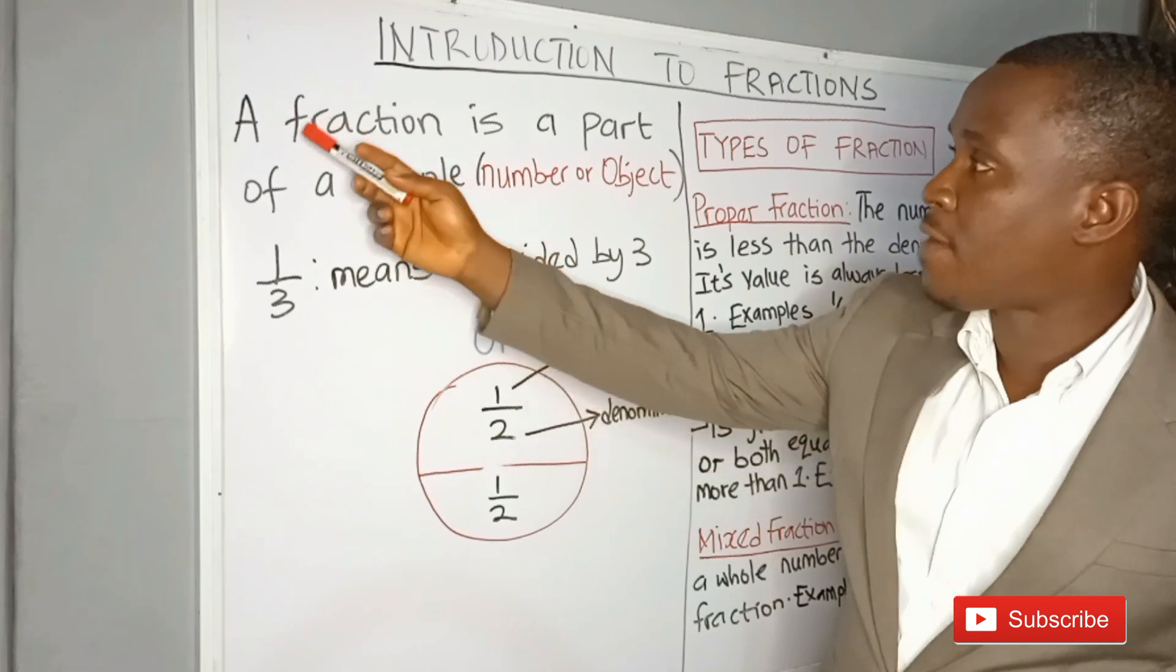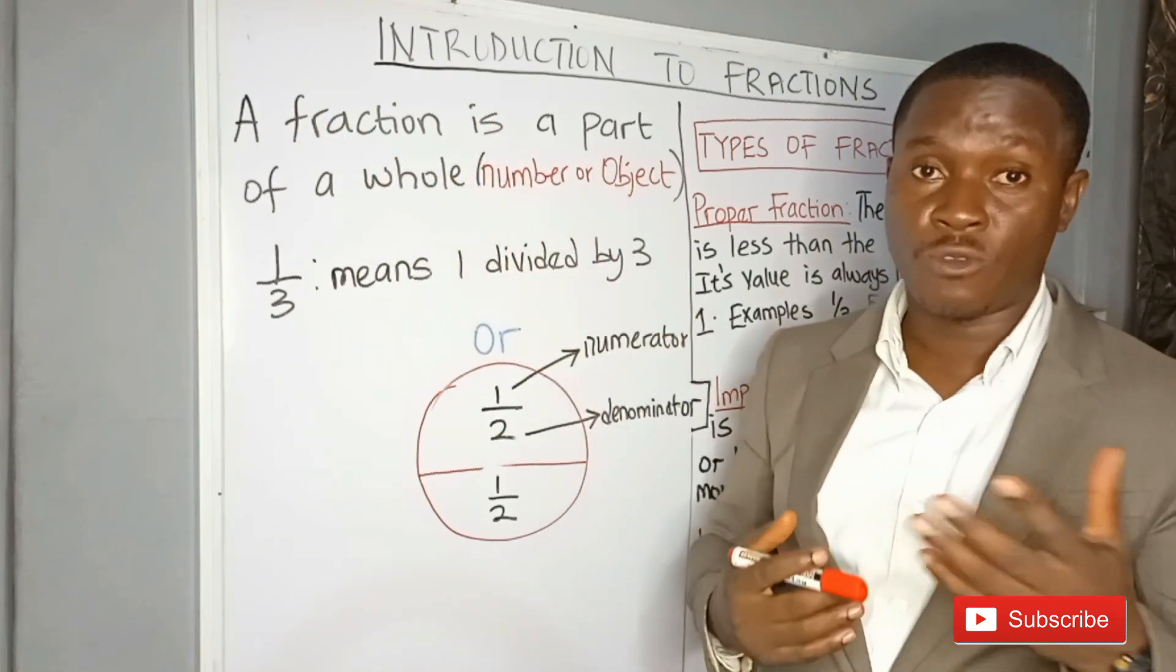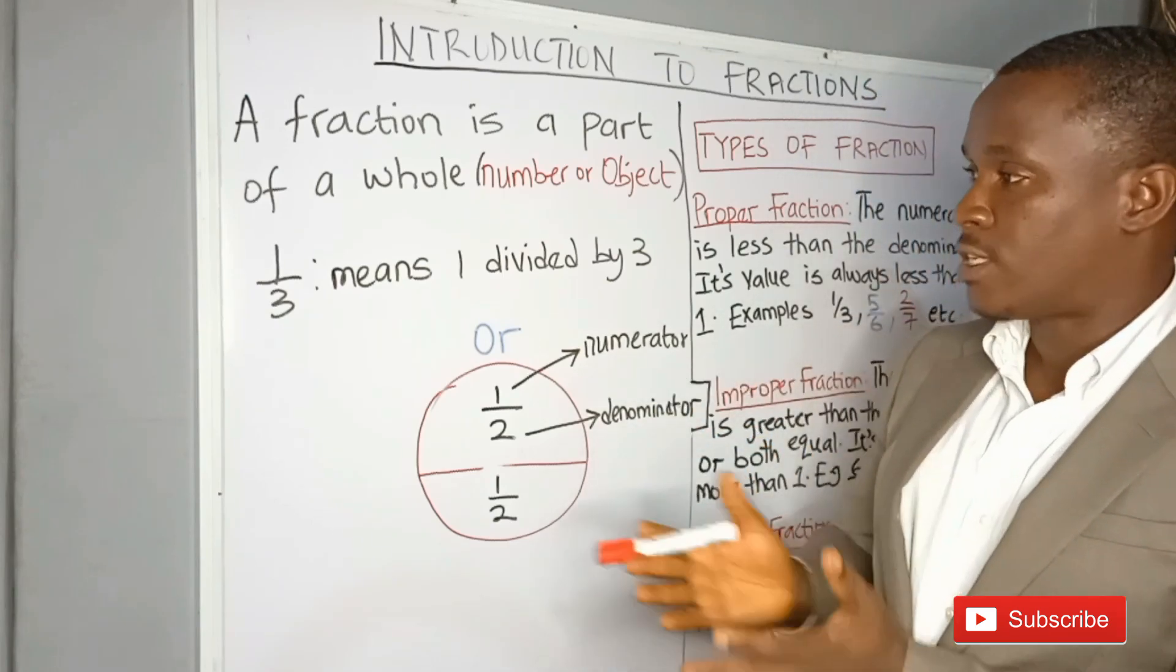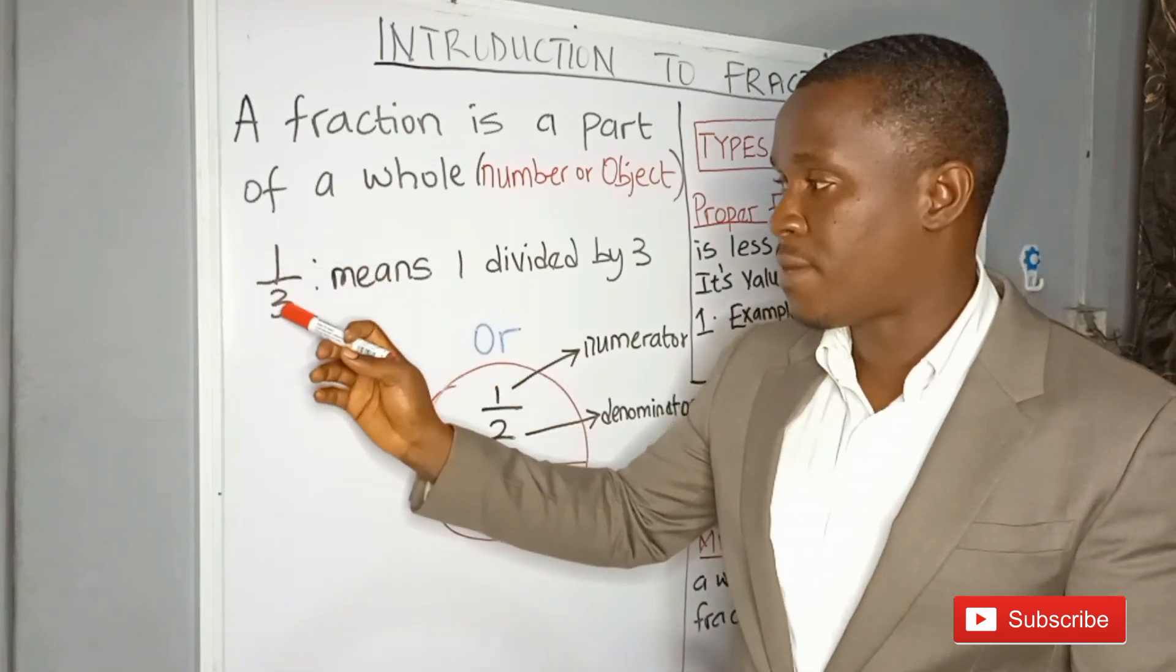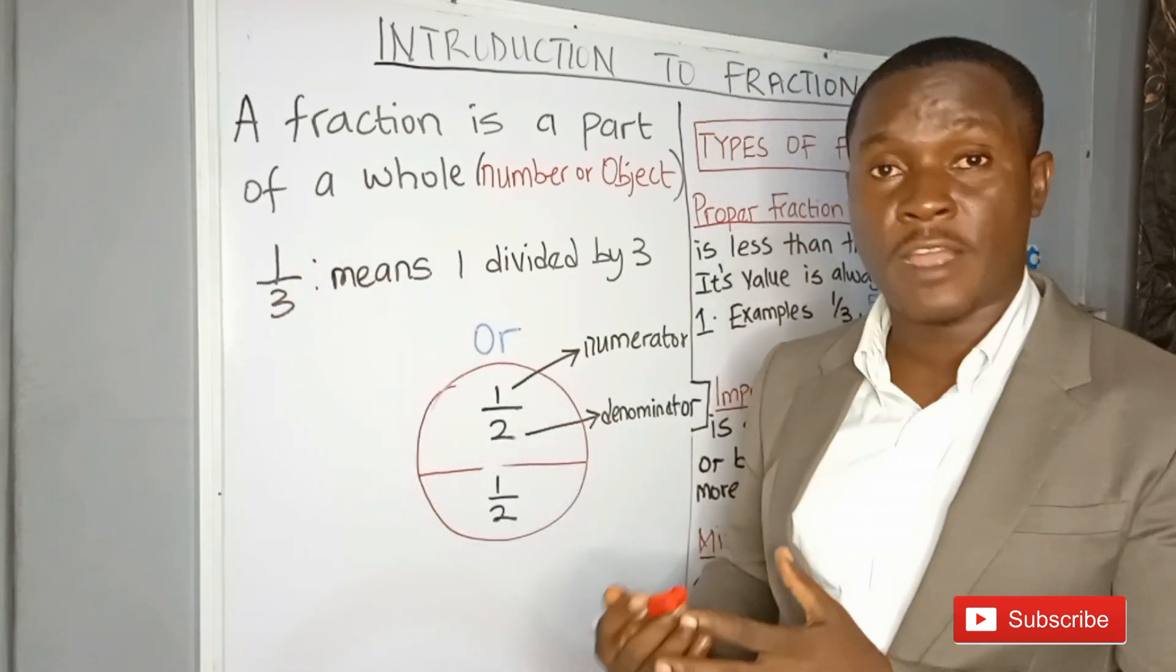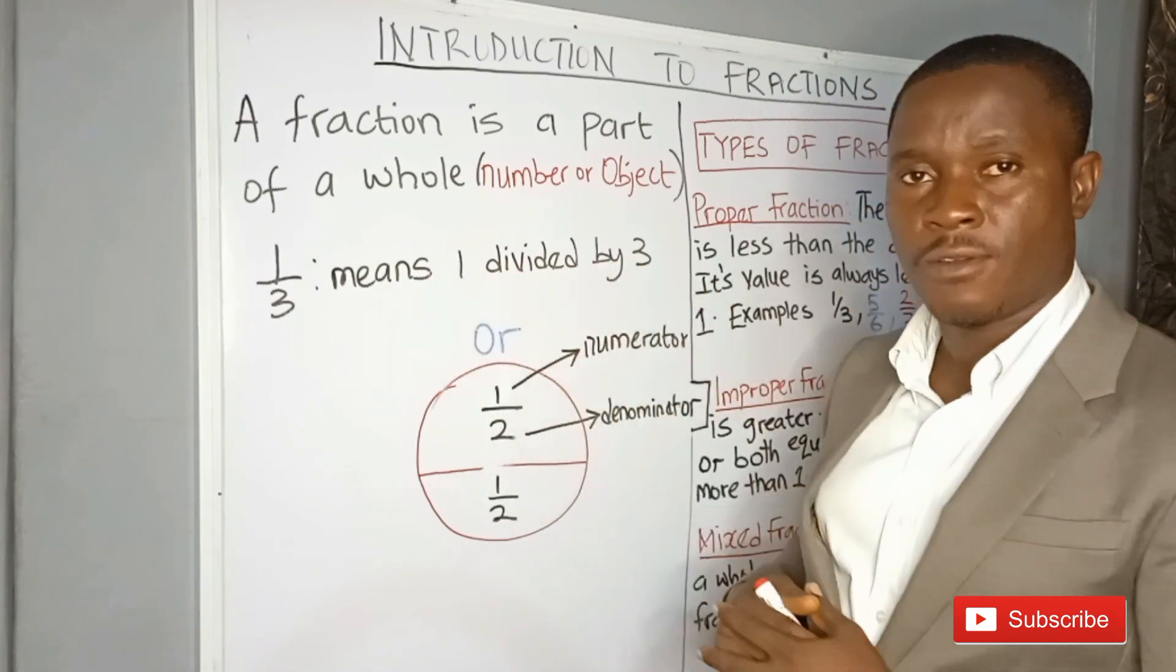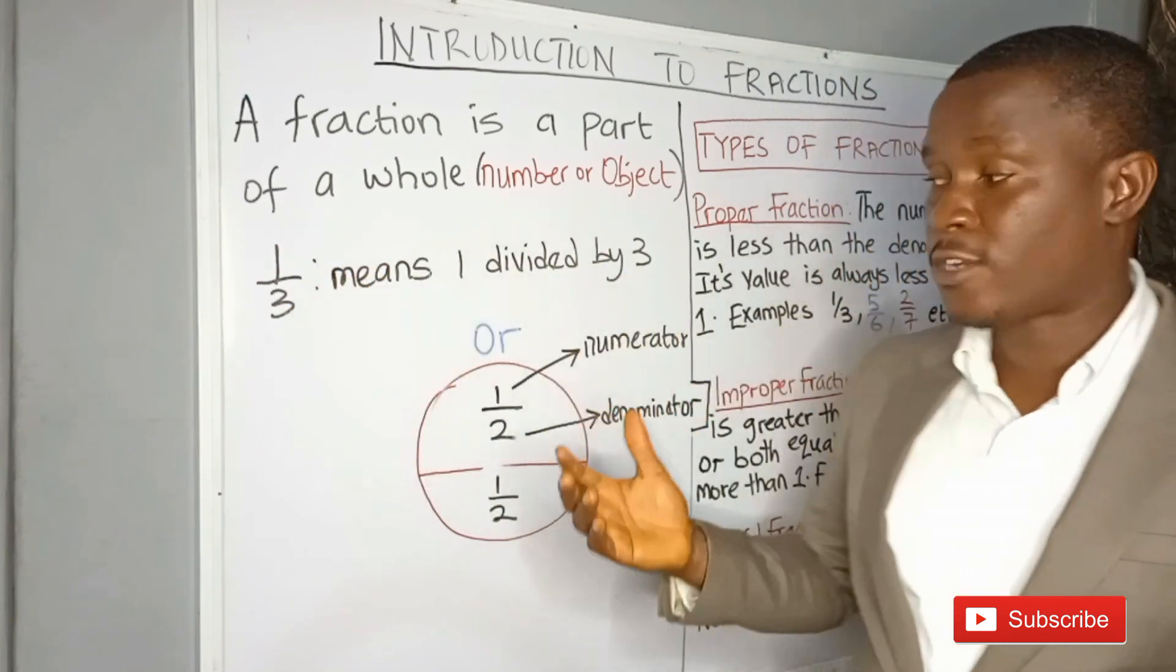What is a fraction? A fraction is a part of a whole. This whole could be a whole number. It could also be a whole object. For example, one is a whole number. But when one is divided by three, it becomes a fraction. This means 1 divided by 3. So whenever a whole number is divided by another number, we have a fraction.